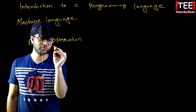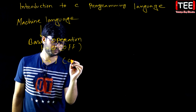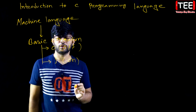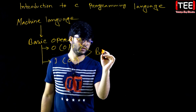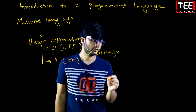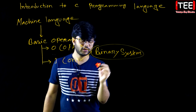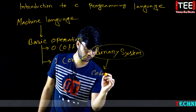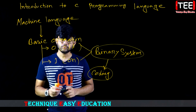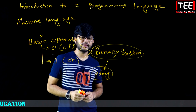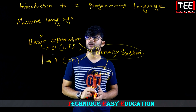Machine language uses 0s and 1s. Basic operation in binary. Binary system, binary system. Coding — machine language. Binary system, binary machine language.